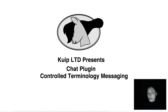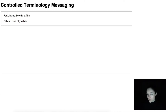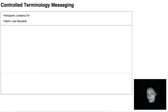Chat applications are usually built with no emphasis on controlled content analysis. This means that messages are freely written and therefore hard to analyze correctly. Our chat plugin integrates a multilingual vocabulary tool that helps users to insert correct terms that will be stored by their official codes and linked to that message in the application's database.